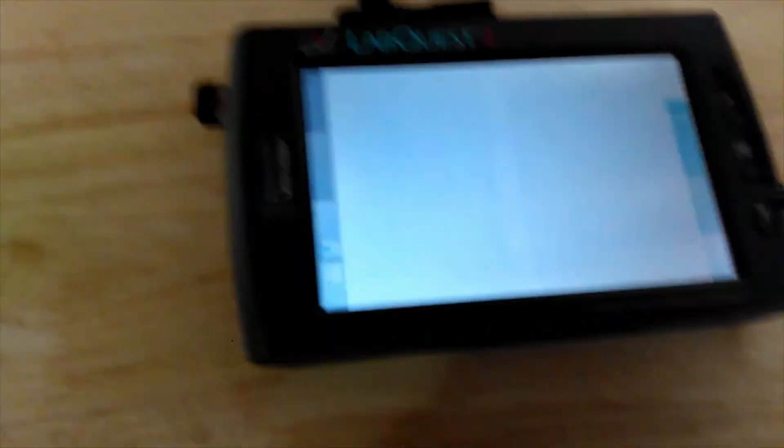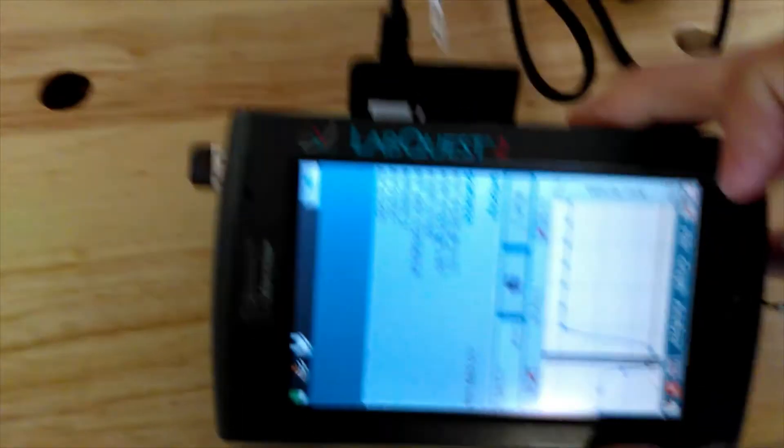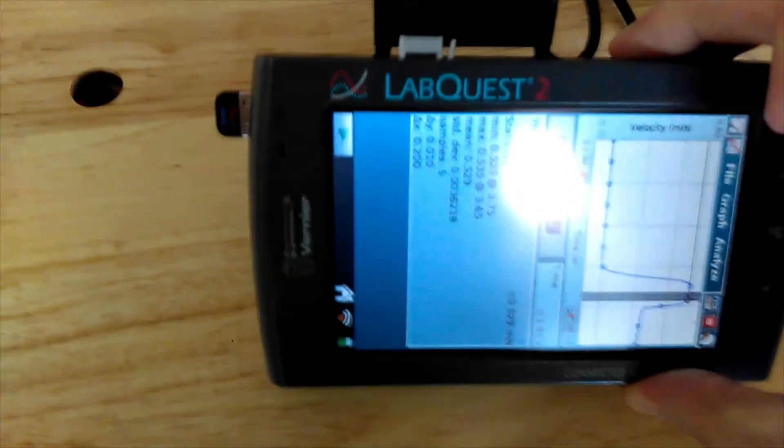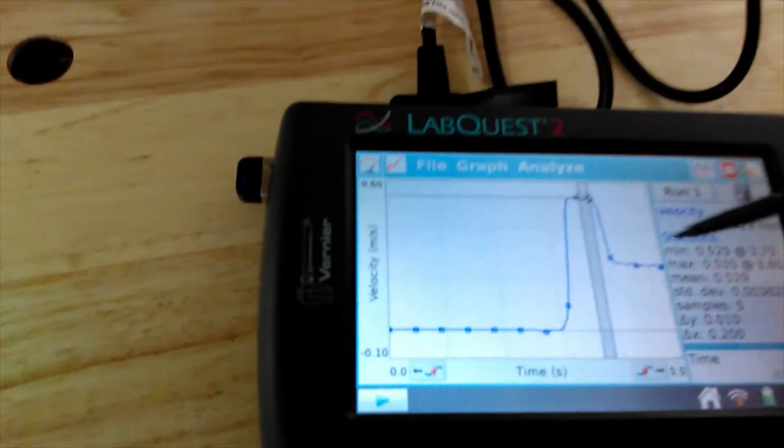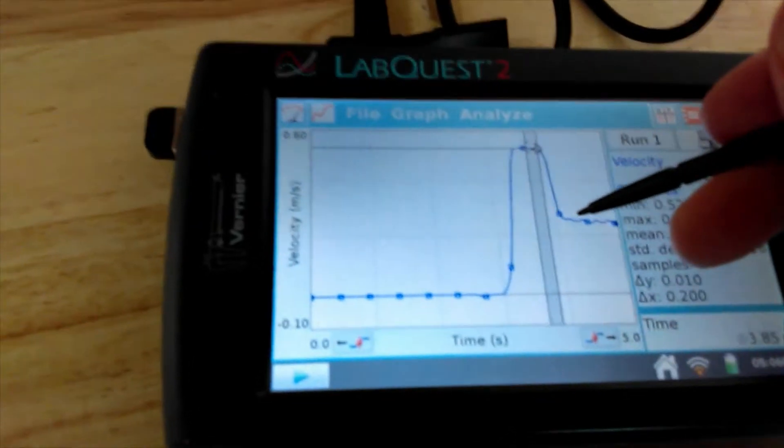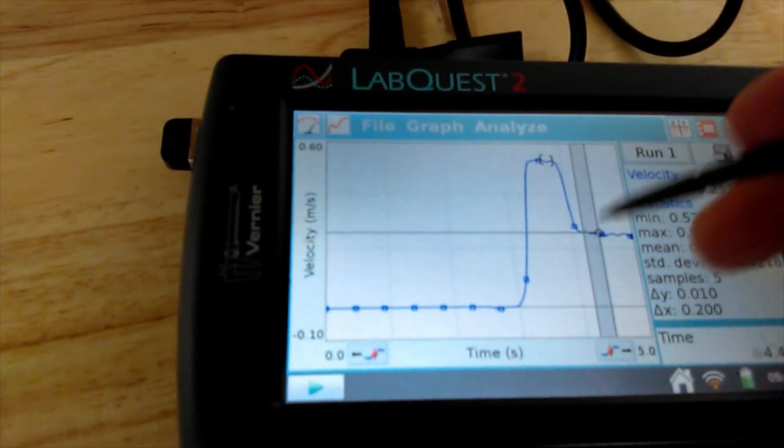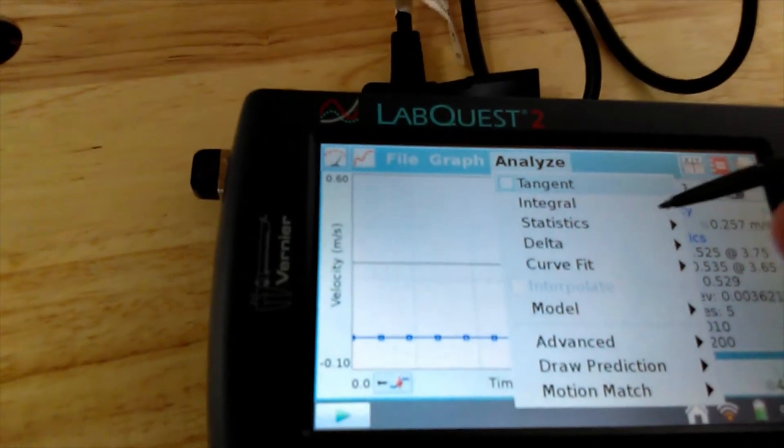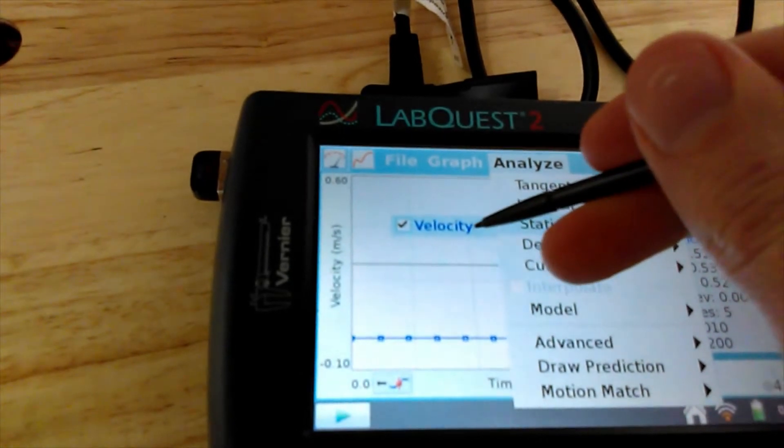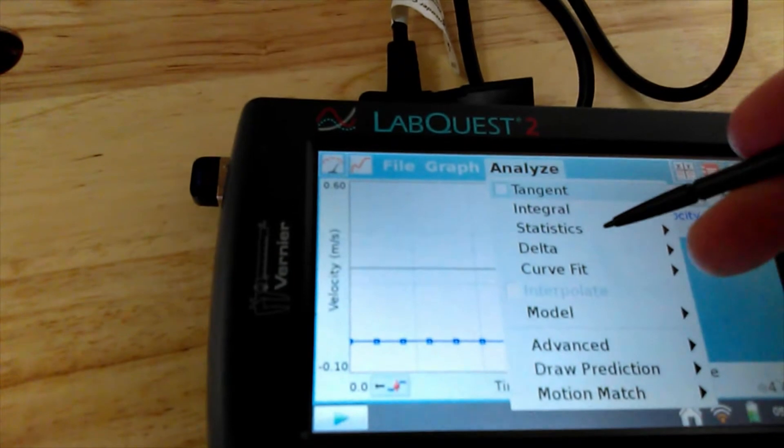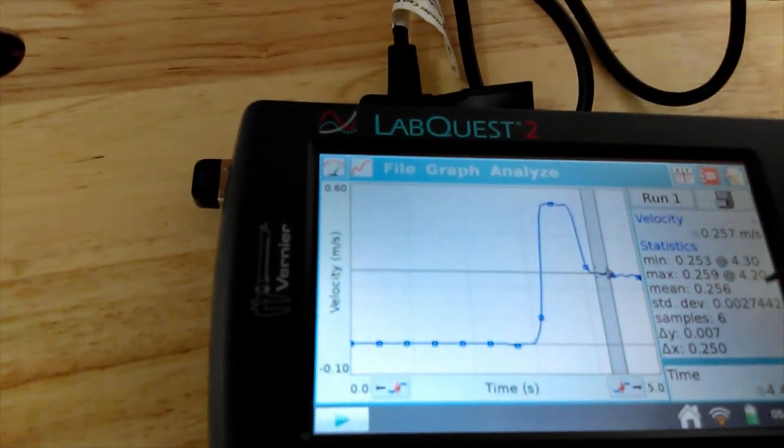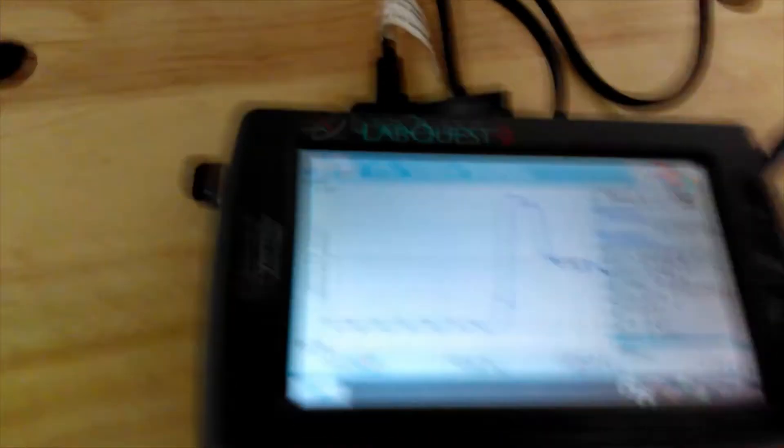Now we need to find the speed immediately after the collision. Let me get my screen reoriented. I want to highlight right after the collision occurred. This time I'll go to analyze. First I need to uncheck the stats from the top, then do it a second time to get the stats for this second part.